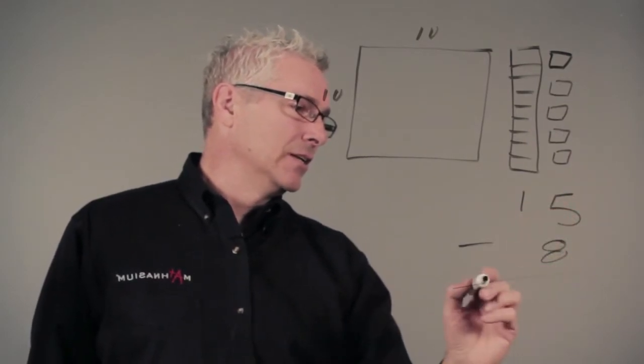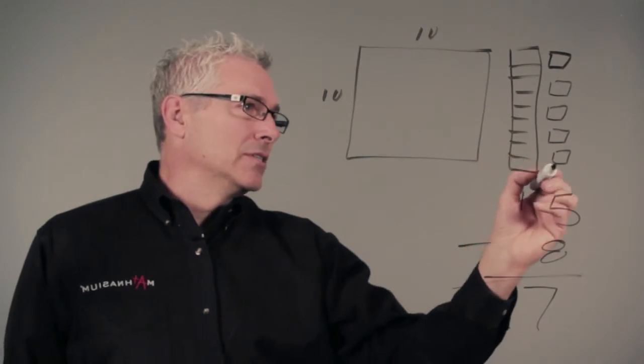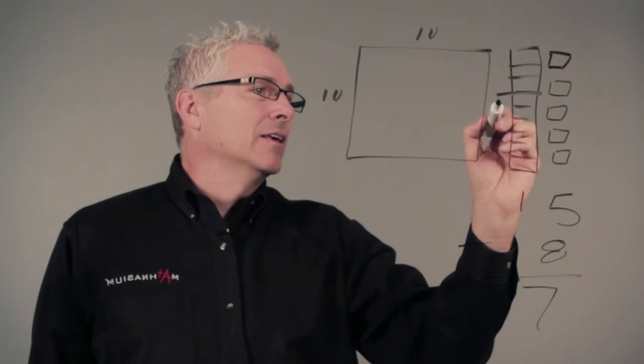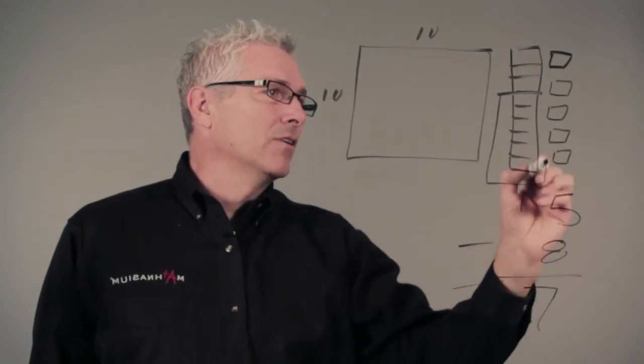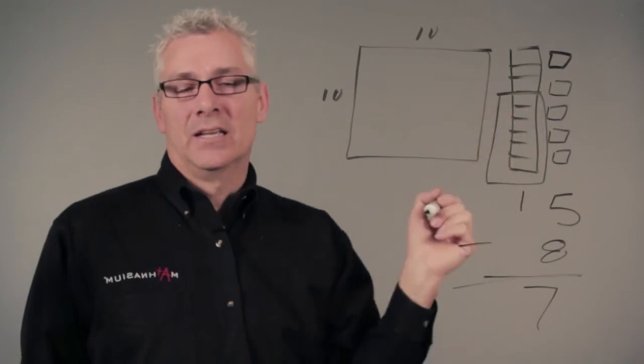8 from 15 is 7, and what that would basically do is take my 5 and three more and leave me with 7. From my 10 block, we would have to break our tens block up into 10 individual pieces.